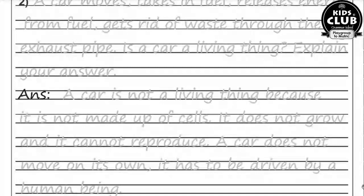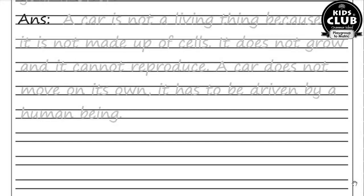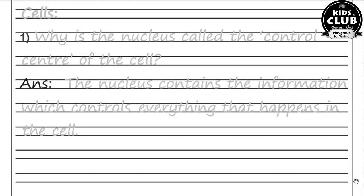Jaise plant ki roots hain, roots show positive hydrotropism. Question number two: A car moves, takes in fuel, releases energy from fuel, gets rid of waste through the exhaust pipe — is a car a living thing? A car is not a living thing because it is not made up of cells. It does not grow and it cannot reproduce. A car does not move on its own — it has to be driven by a human being.